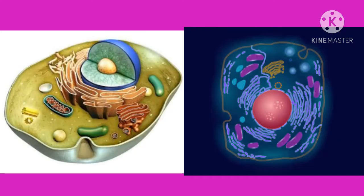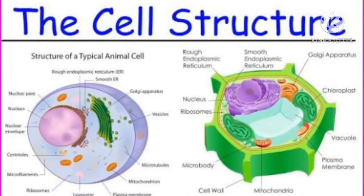Hello, welcome students. In the previous video, we started lesson number 10: Cell and Cell Organelles. There you studied the components of the cell — cell wall, plasma membrane, and cytoplasm — and also the organelles of the cell: nucleus and endoplasmic reticulum. Today we are going to study the remaining cell organelles.